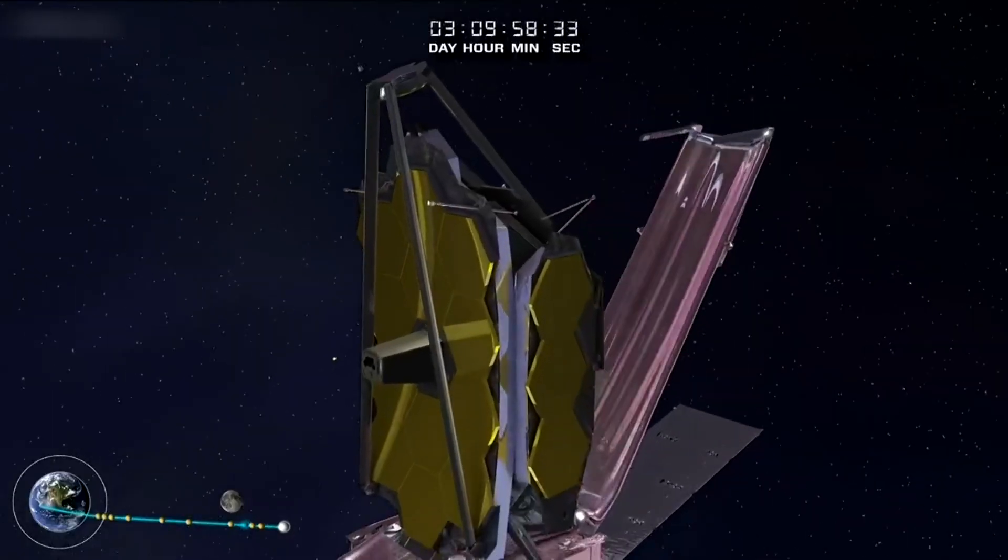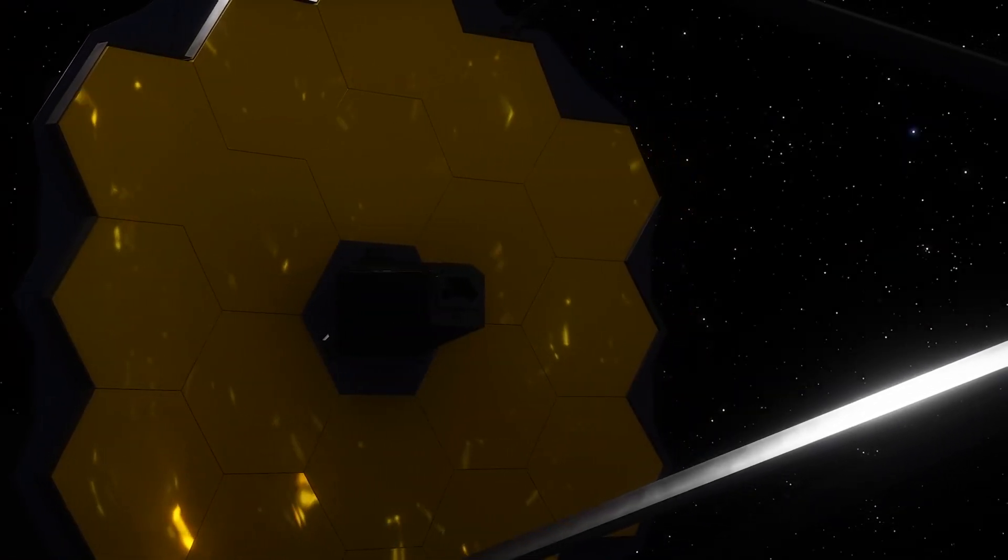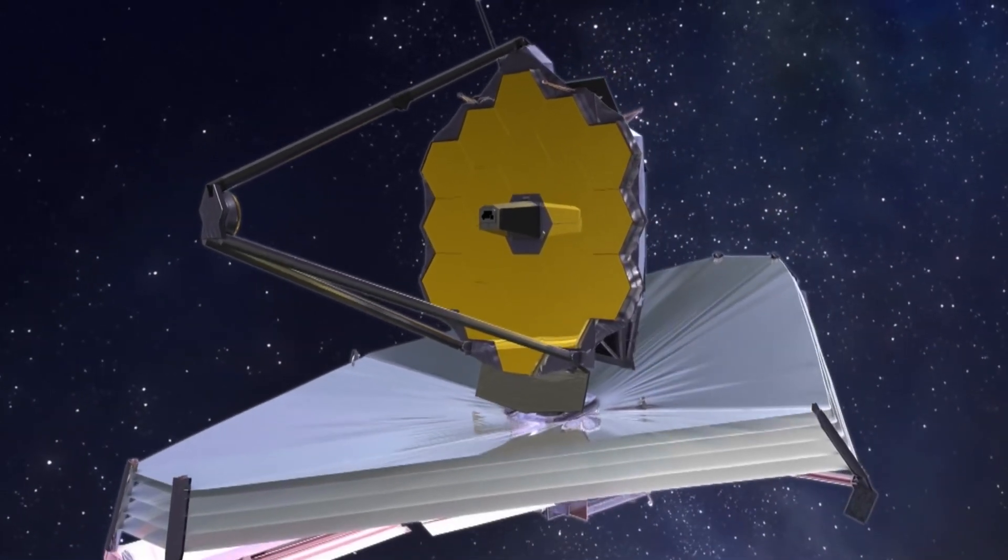As the instruments are being turned on, it's both exciting and it's nerve-wracking because you know that there could be things wrong. After decades of work, the James Webb Space Telescope was finally operational. And it wasn't long before the images started coming in.